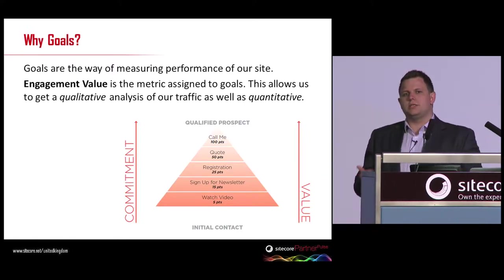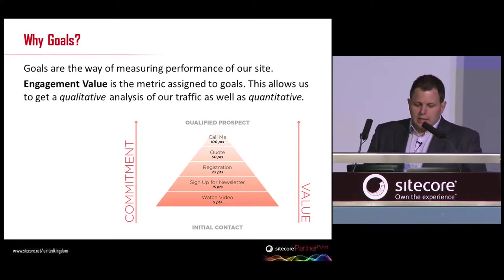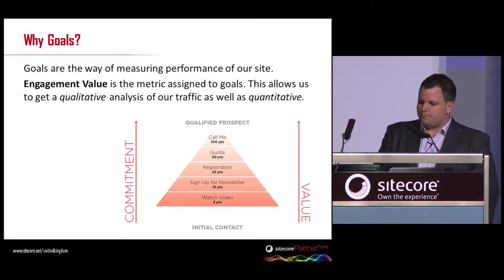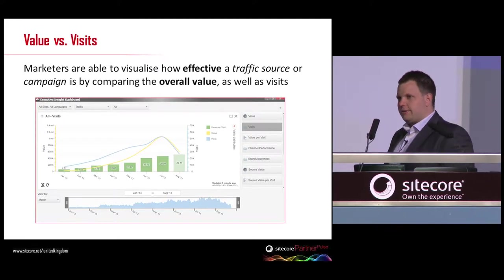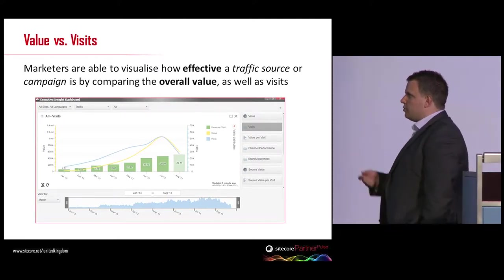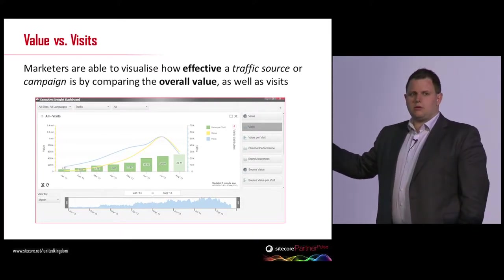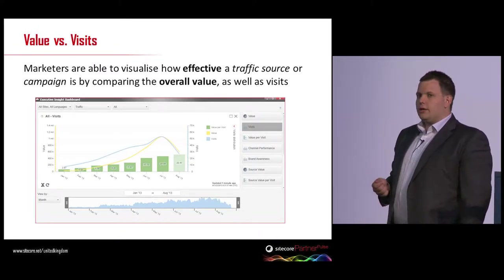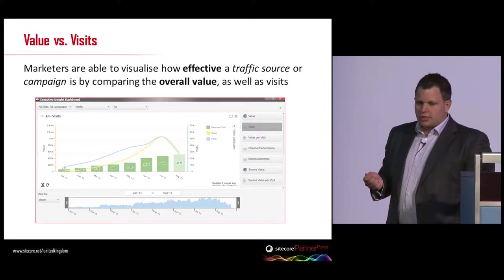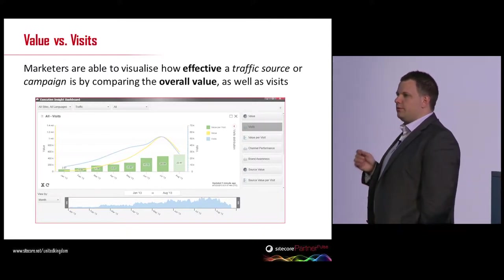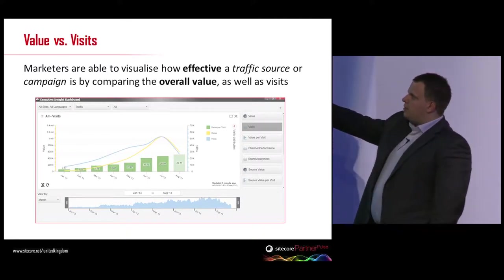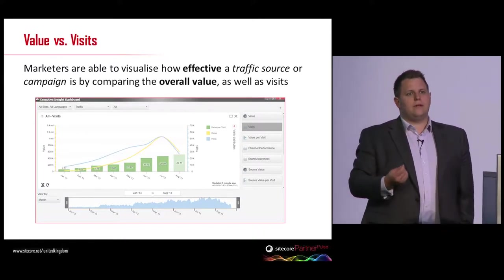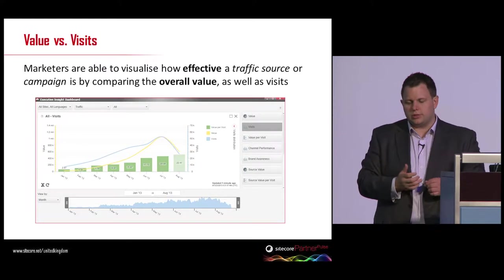Ultimately, it gives us that qualitative measurement, not the quantitative. You know what the scale is, and the points have been decided. As the points get greater, the commitment and the value to the organization grows. Where do we then start to see that data? Where do we see engagement value? This is the Executive Insight dashboard. When we start to track engagement value, the differentiator with Sitecore is that we'll see it in that little yellow line throughout all of our reports.